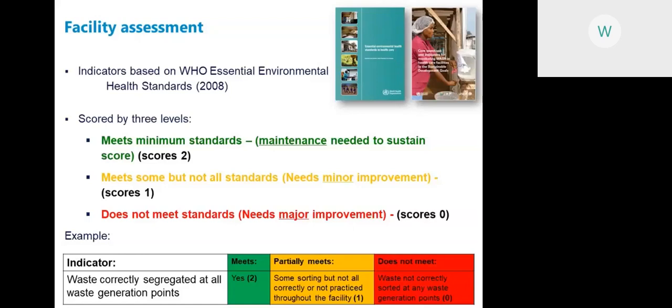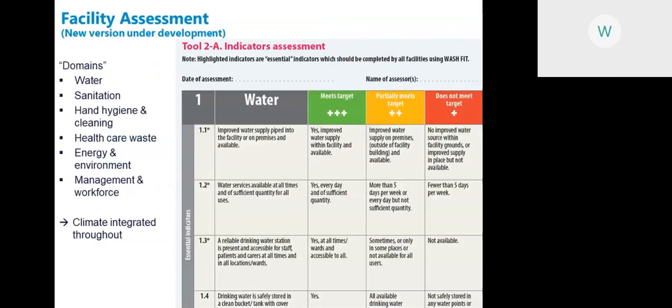For example, the indicator 'waste is correctly segregated at all waste generation points' scores 2 if yes, all waste is correctly segregated everywhere; scores 1 if some sorting is done but not all correctly or not practiced throughout the facility; and scores 0 if waste is not correctly sorted at any waste generation point. The indicator assessment is categorized into domains: water, sanitation, hygiene and cleaning, healthcare waste, energy and environment, and management and workforce — with climate-specific indicators integrated throughout each domain.